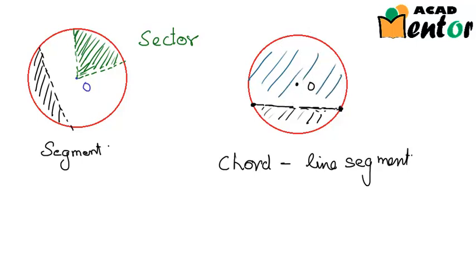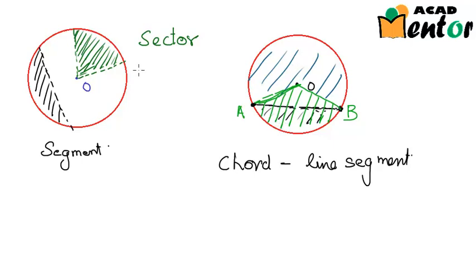We also see that if you join point O, the center, with the end points of the chord — that is point A and B — then we will have a sector in between these two radii. So I hope the concepts of sector, segment, and chord are clear to us.